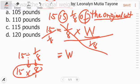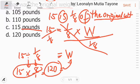So i-multiply mo lang yan, 15 times eight, and that is 120. So ang W ay, or yung original weight ay 120. So ang answer dito ay letter D.